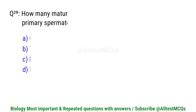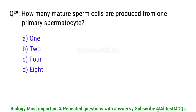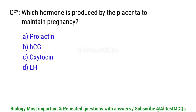Question number 28. How many mature sperm cells are produced from one primary spermatocyte? Right option is C. Four.